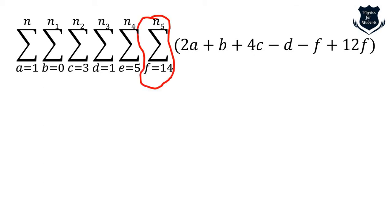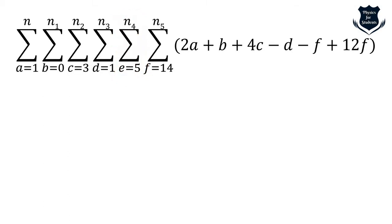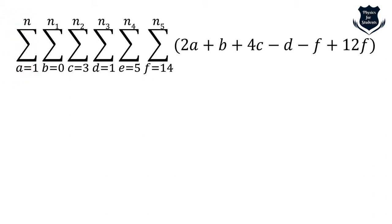You need to start with the extreme right-hand side sigma — the innermost sum — and then slowly work back to the left until you reach the leftmost sigma. On the right-hand side of the screen, marked in a red circle, we start with f equals 14, then e, then d, then c, then b, then a, going right to left as shown by the green arrow.